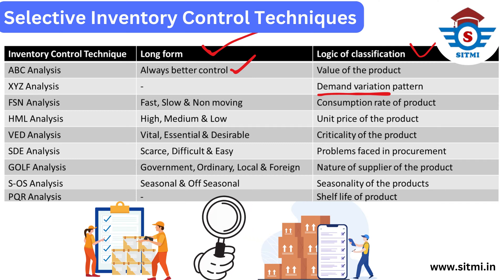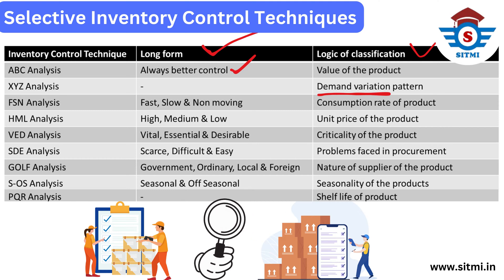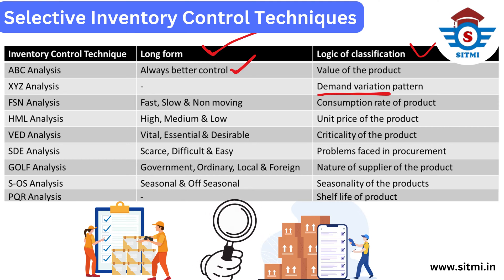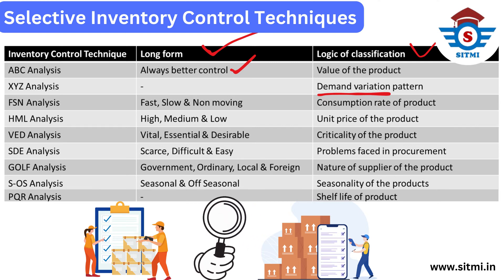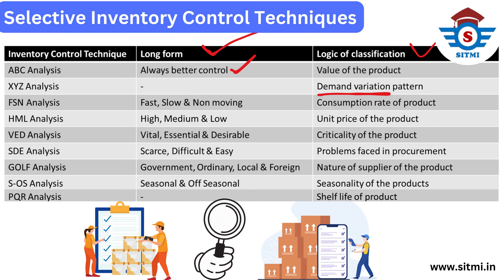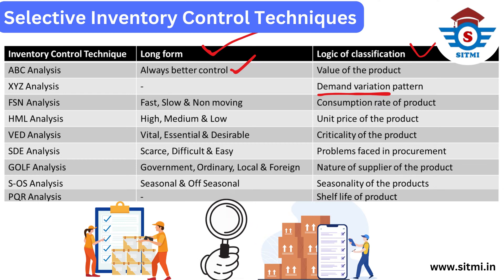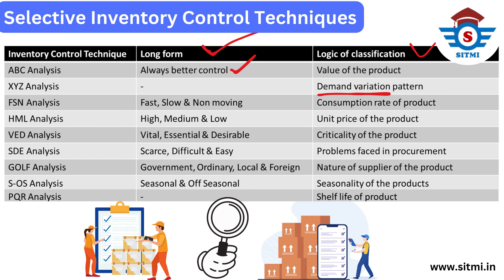The third and one of the important techniques is FSN analysis. FSN stands for Fast moving, Slow moving, and Non-moving material. In the calculation of FSN analysis, the consumption rate of the product is considered. It uses a different attribute which considers the turnover rate or inventory consumption rate of the product.